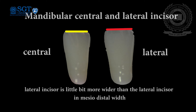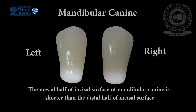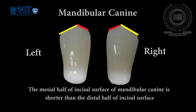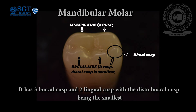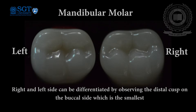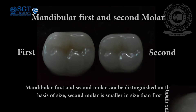Mandibular central and lateral incisors are almost similar in size and shape; the only mild difference is that the mesiodistal width of the lateral incisor is slightly more than that of the mandibular central incisor. The mandibular canine can be distinguished on the basis of the incisal surface, which is divided into mesial and distal halves — the mesial half is shorter than the distal half. The mandibular first molar has five cusps: three buccal and two lingual. The distobuccal cusp of the mandibular molar is the smallest, and you can differentiate between right and left side by observing the distobuccal cusp, which should lie on the distal side. The only difference between the mandibular first and second molar is the size of the occlusal surface; the mandibular second molar is smaller than the first molar.